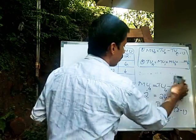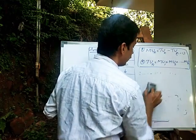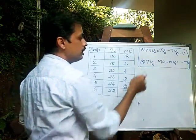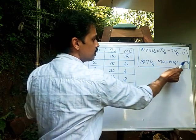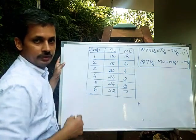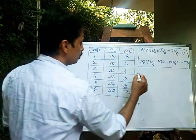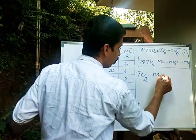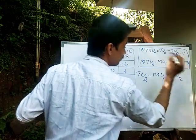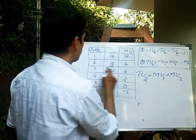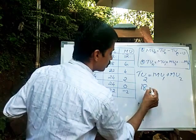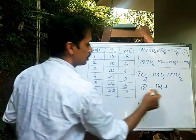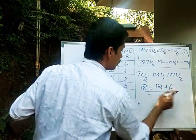The second relation is: TUn is equal to MU1 plus MU2 plus MU3 and so on. For example, TU2 equals MU1 plus MU2. TU2 is 18, so 18 equals MU1 which is 12, plus MU2 which is 6. 12 plus 6 equals 18.